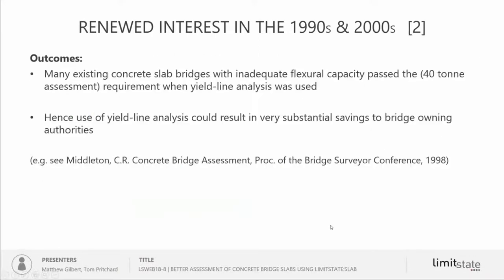The downside of this approach, however, is that there is always the worry that there's a failure mechanism relevant to the bridge you're looking at that hasn't been entered into this library. So perhaps mechanism 28 is critical in your bridge, but clearly this particular type of approach won't pick that up. The outcome was that bridge owners had substantial savings because they didn't need to strengthen as many bridges as expected.